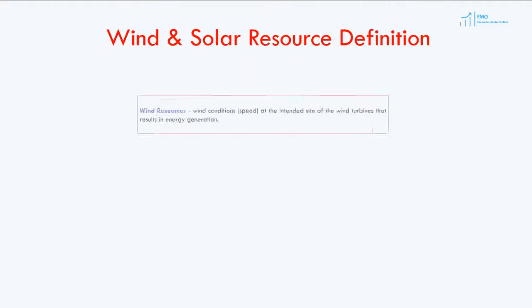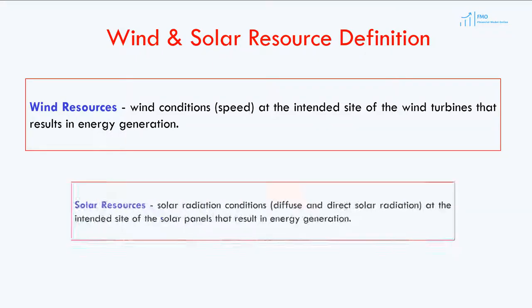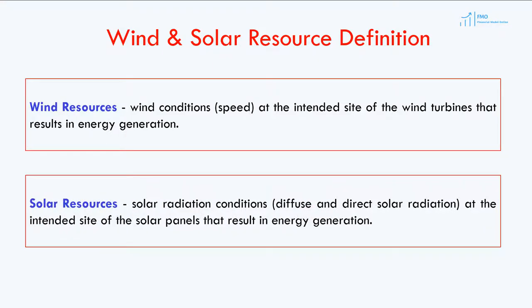Wind resource is defined as wind speed at the intended site of installation of the wind turbines that results in energy generation. Similarly, the solar resource is solar radiation conditions at the site where solar panels will be installed.